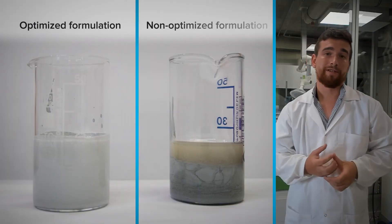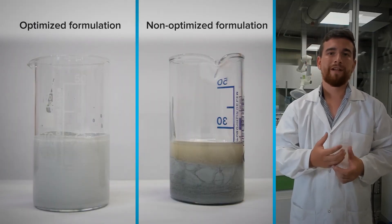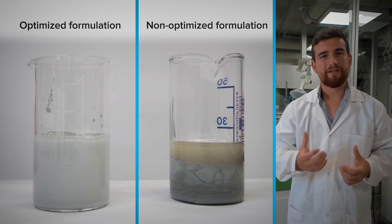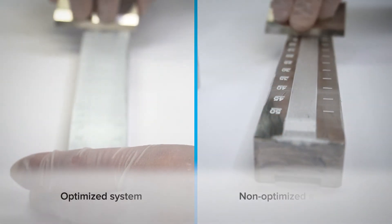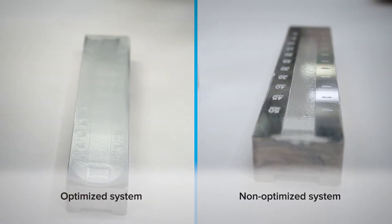The first issue is instability. A non-stable system can lead to layering of different components. The second issue is a bad dispersion or agglomeration, which can lead to bigger particles and an inhomogeneous system.